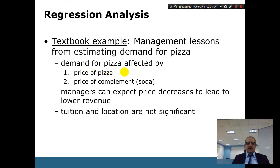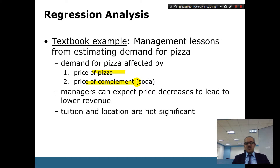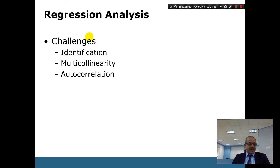In the textbook example on pizza prices, Maharram ran the statistical analysis and got the results. Managers can expect that price decreases lead to lower revenues. We also looked at how tuition and location were not statistically significant in that example.